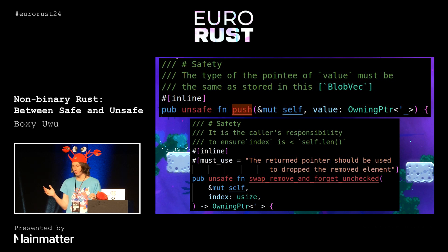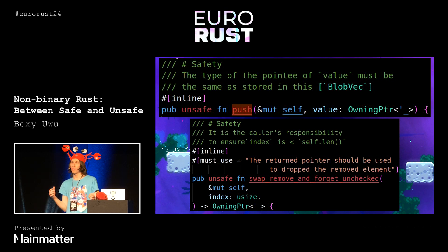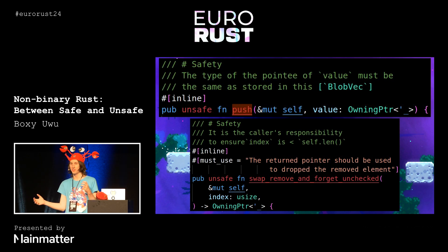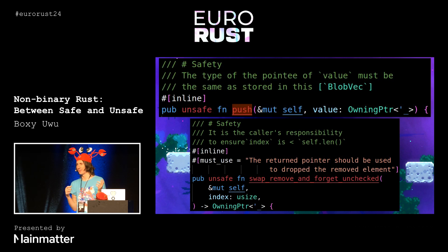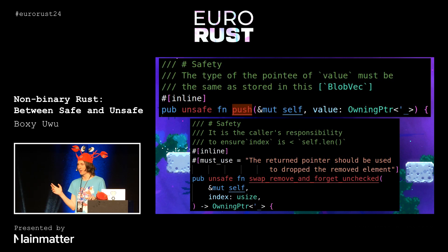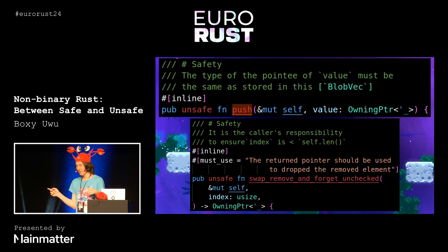If we didn't have this owning pointer type, we'd have a safety invariant about when the pointer is valid, saying that you shouldn't really be using it after you access the vec again, because if you access the vec again you might remove or insert, which might write data over the place where we're actually storing the value that has been moved out of the vec.